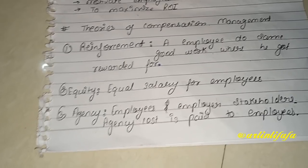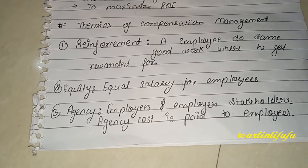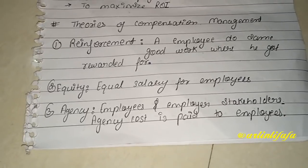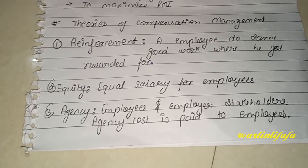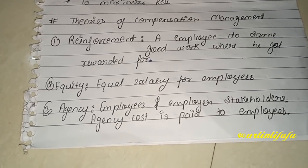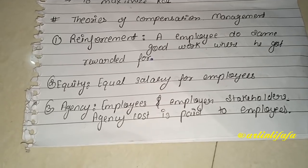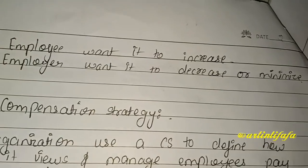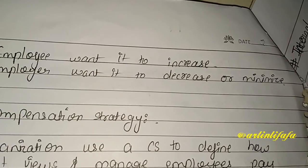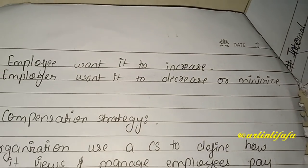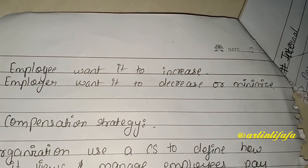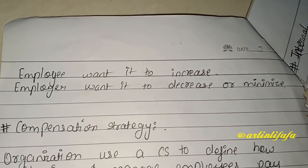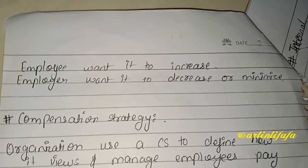تیسری theory ہے agency theory۔ Agency theory کہتی ہے کہ employees اور employer دونوں stakeholders ہوتے ہیں۔ Agency cost is paid to employees — employer کو employees کو ایک agency cost pay کرنی پڑتی ہے work کے regard میں۔ Employee چاہتا ہے کہ وہ زیادہ ہو اور employer چاہتا ہے کہ جتنا کم ہو سکے اتنا کم ہو۔